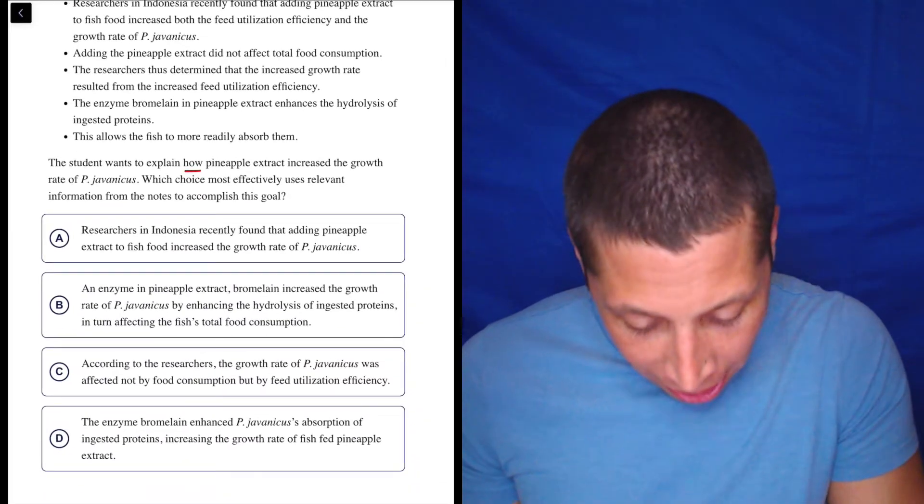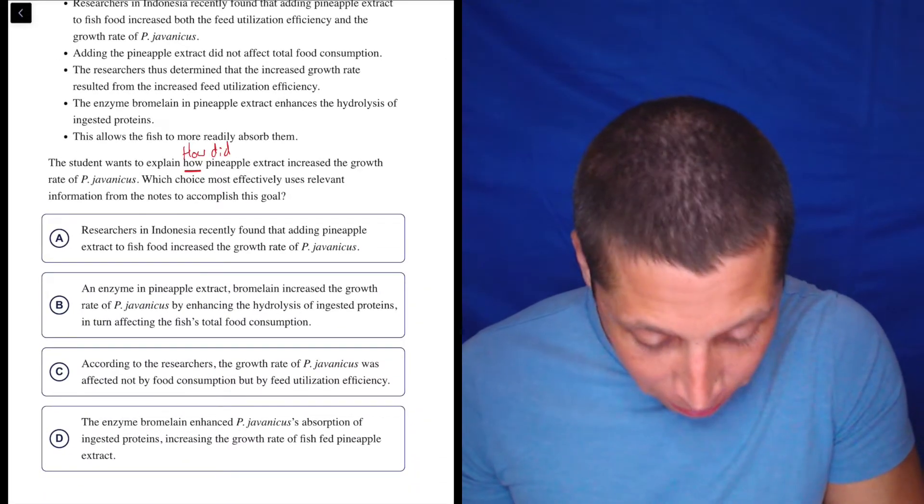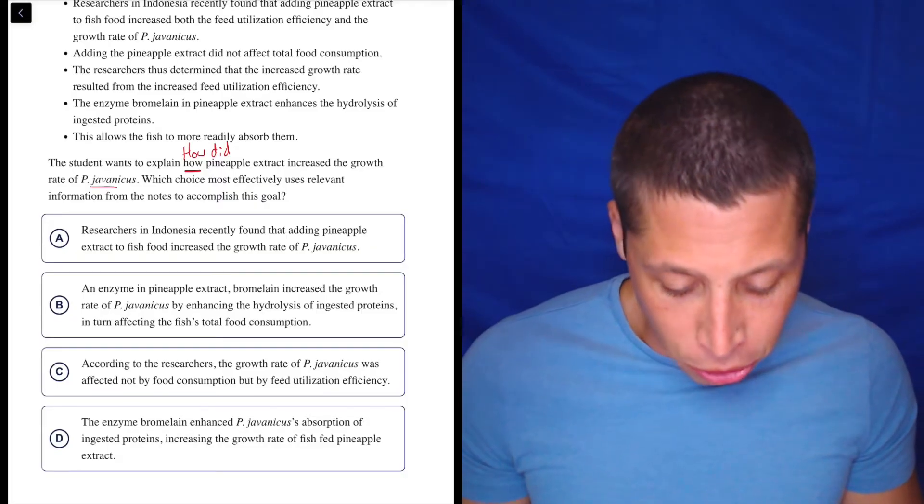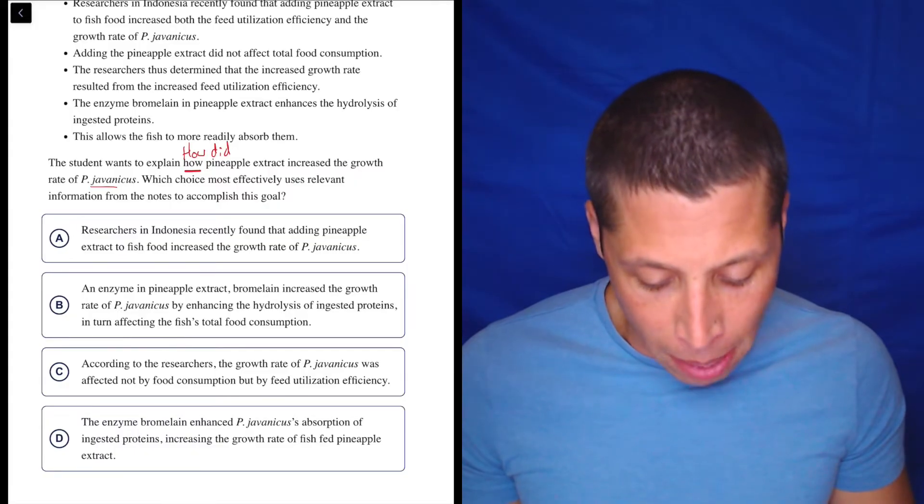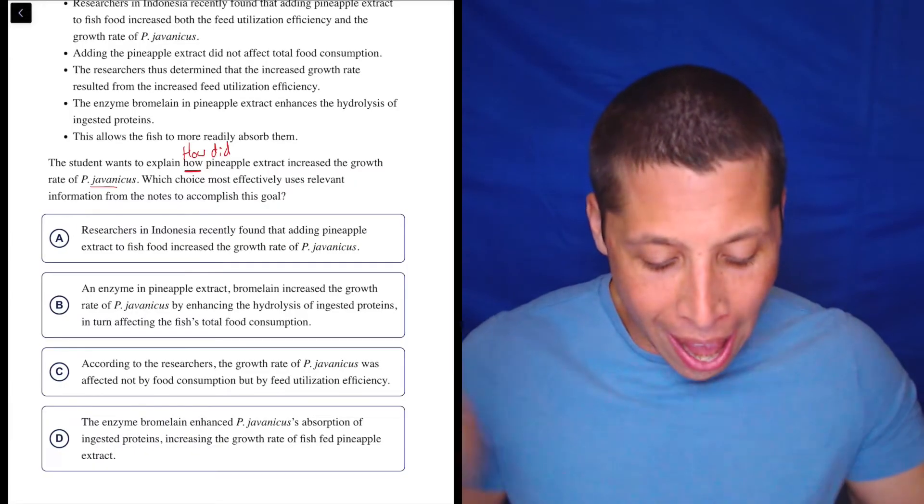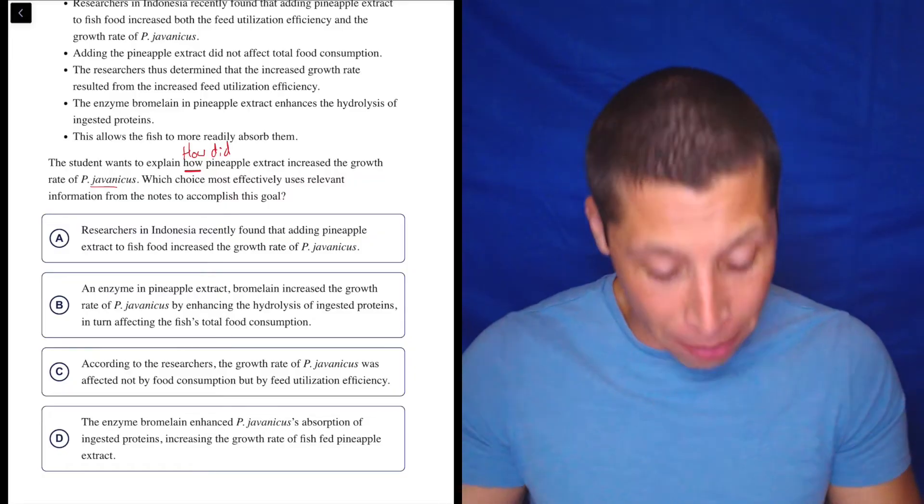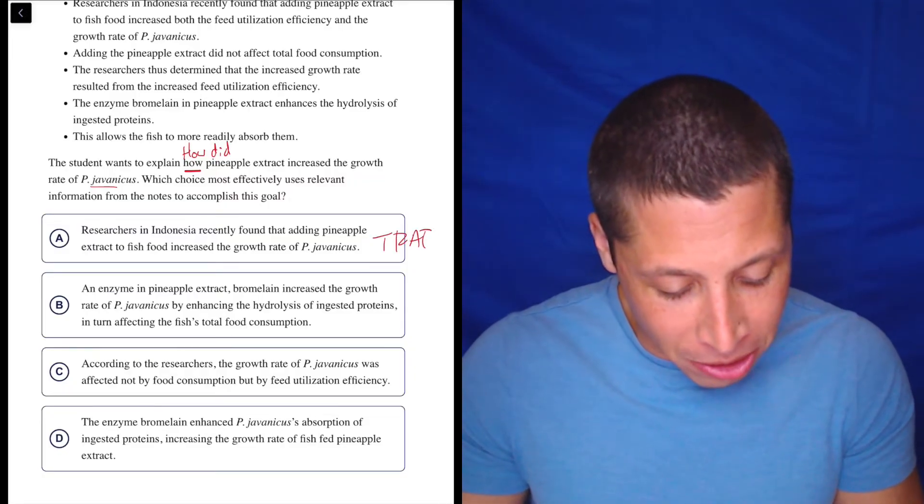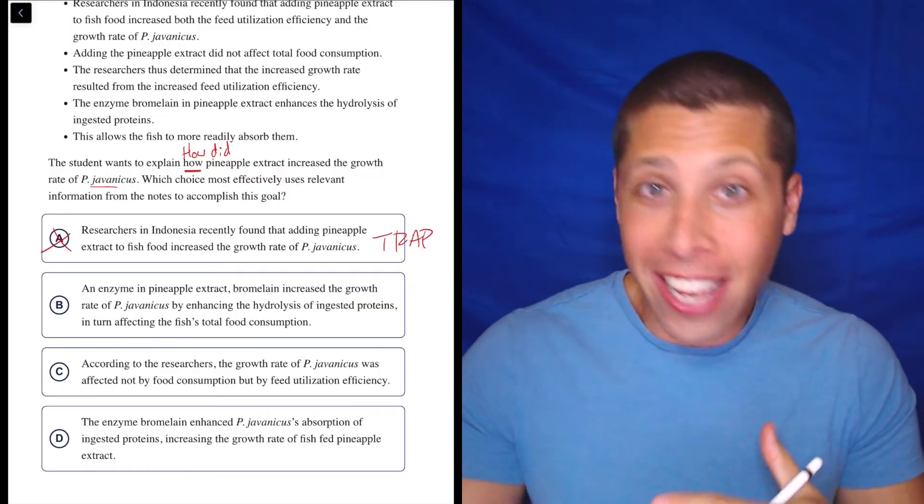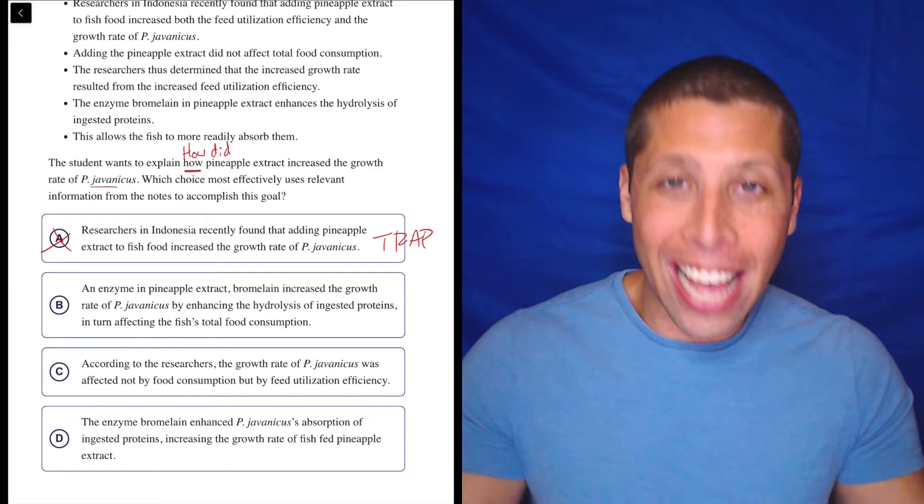So how did pineapple extract increase the growth rate of jovenicus? Researchers in Indonesia recently found that adding pineapple extract to fish food increased the growth rate of P. jovenicus. How? How did it increase the growth rate? This is a trap. They're trying to get us to pick the first thing that looks good, but no way. This isn't answering the how. It is saying that it increased the growth rate, but I need the how.